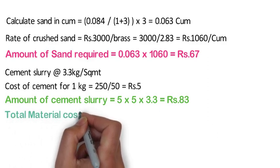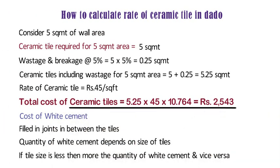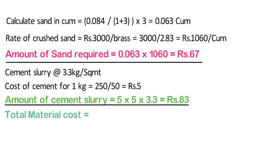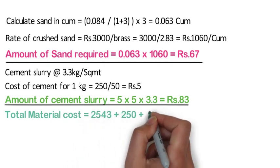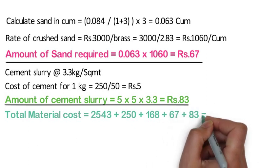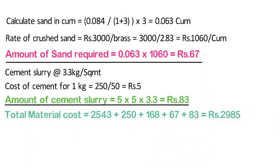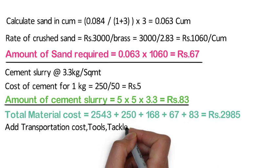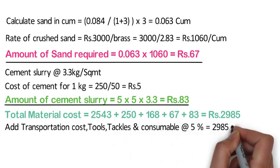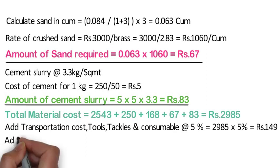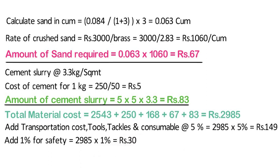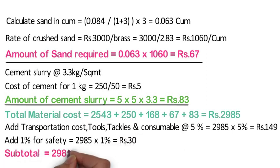For the total material cost, we add the cost of ceramic tile, white cement, grey cement, sand, and cement slurry: 2,543 plus 250 plus 168 plus 67 plus 83 = 2,985 rupees. Now we add the cost of transportation, tools, tackles and consumables at 5%: 2,985 x 5% = 149 rupees. Adding 1% for safety: 2,985 x 1% = 30 rupees. The subtotal is 2,985 plus 149 plus 30 = 3,164 rupees.